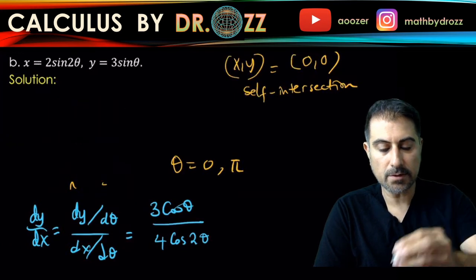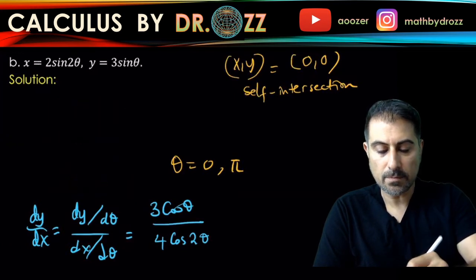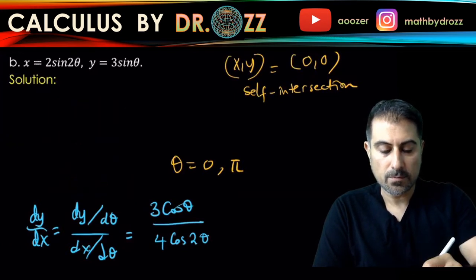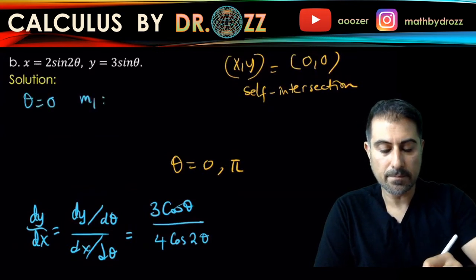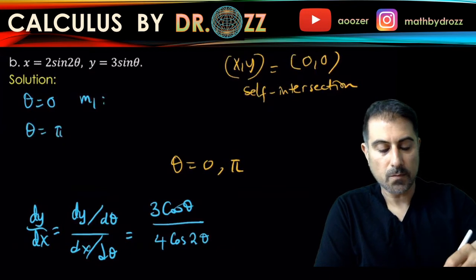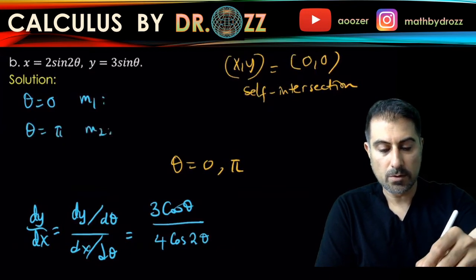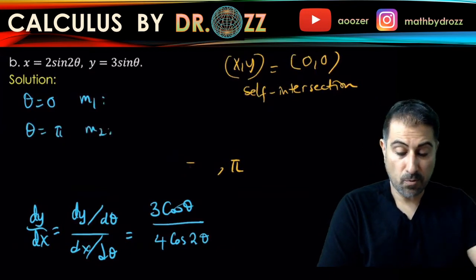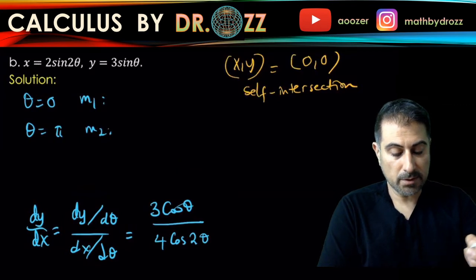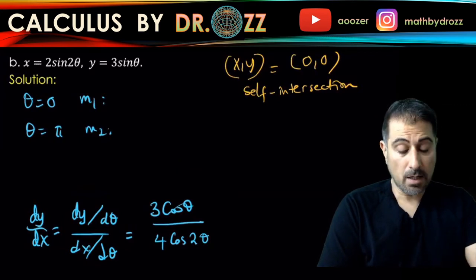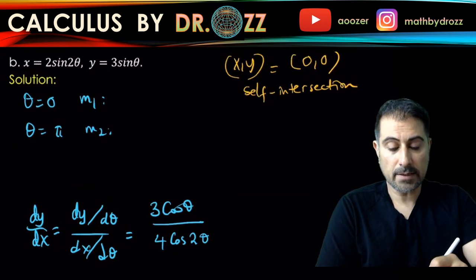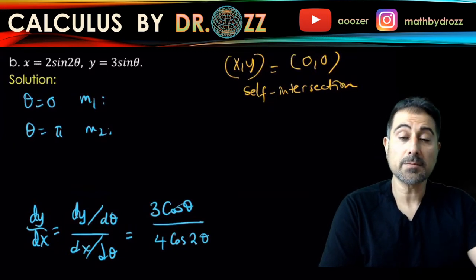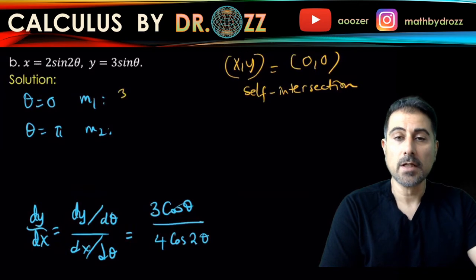I need two different slopes, right? One is at zero and the other one is at pi. For m1, let's see: theta equals zero, m1 is going to be three times cosine zero divided by four times cosine zero, that's three quarters, because cosine zero is one.